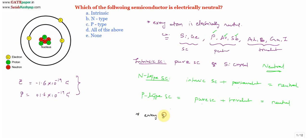Finally, we can say every semiconductor, whether intrinsic or extrinsic, is electrically neutral. You may think that since n-type semiconductor has electrons as majority charge carriers — more electrons than holes — it should be negatively charged. But that is not the case. Remember: every semiconductor is electrically neutral.